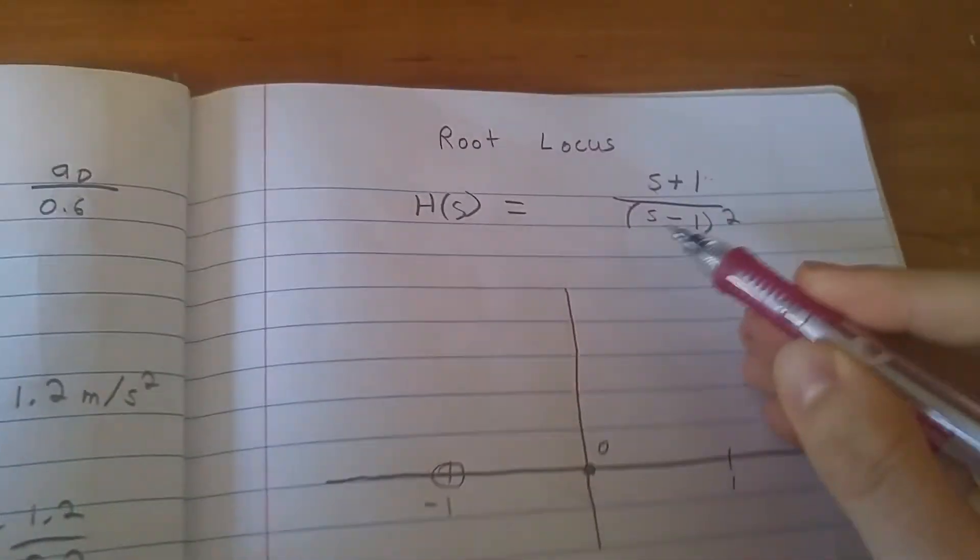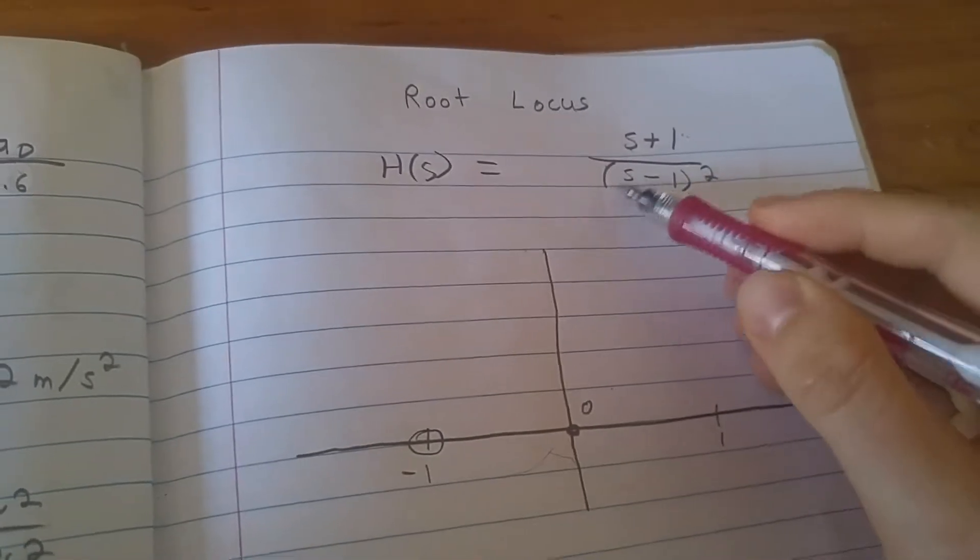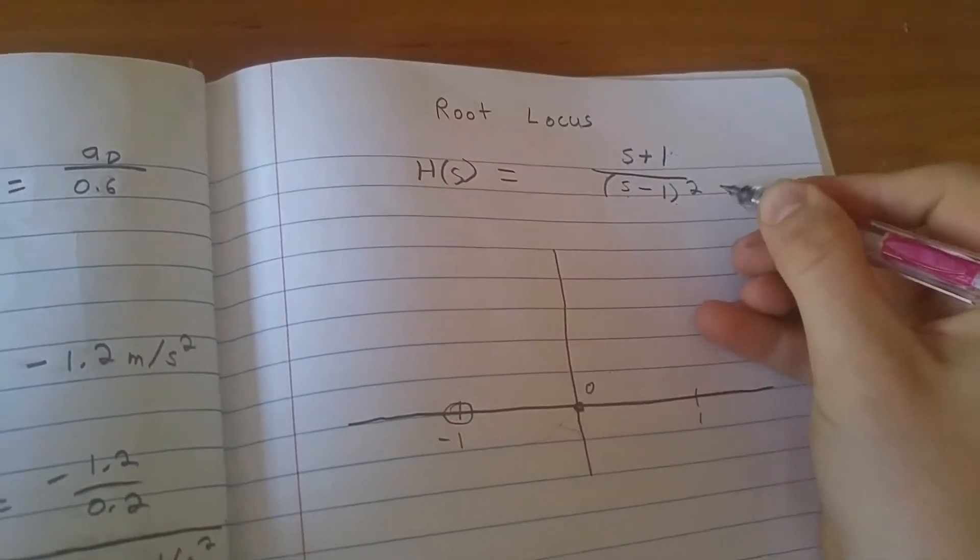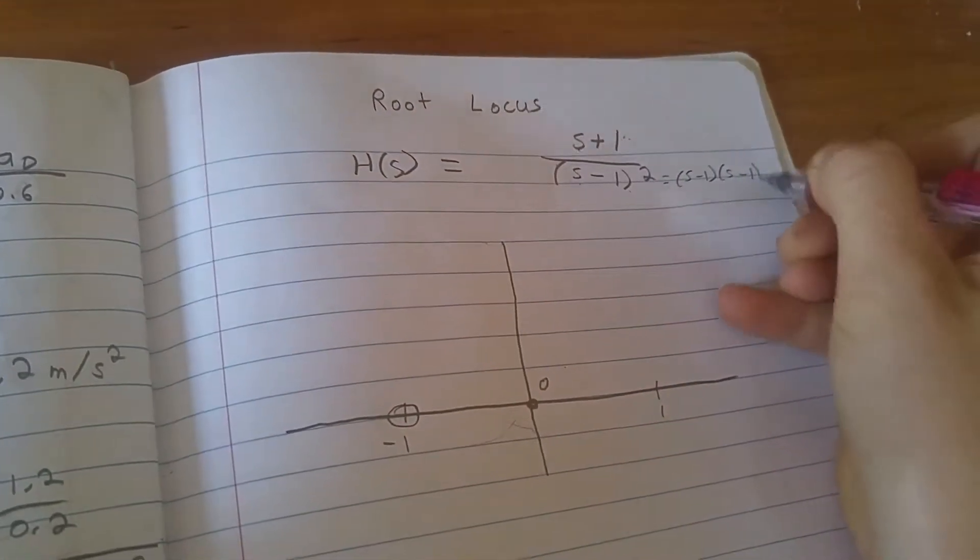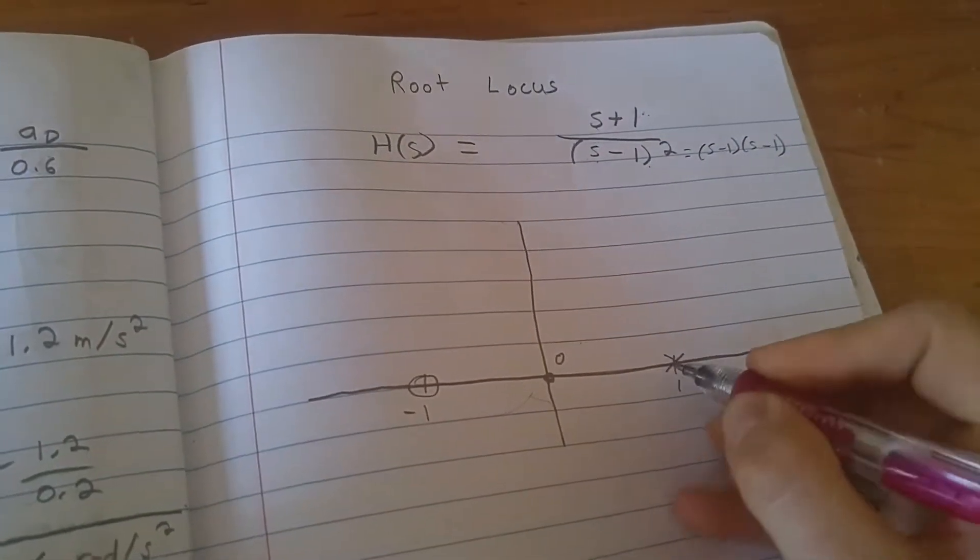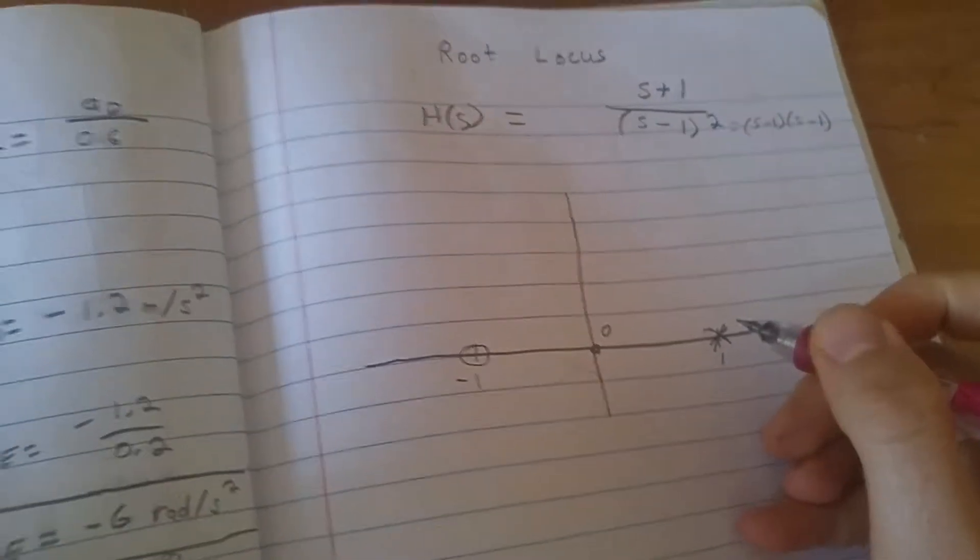Then there's two poles at positive one. How do I know it's positive one? Because if I plug in a one here, then that denominator becomes zero. I know there's two of them because this is the same thing as s minus one times s minus one, s minus one squared. So if I plot both of them, one here and then one here, I'm actually plotting two at this point.